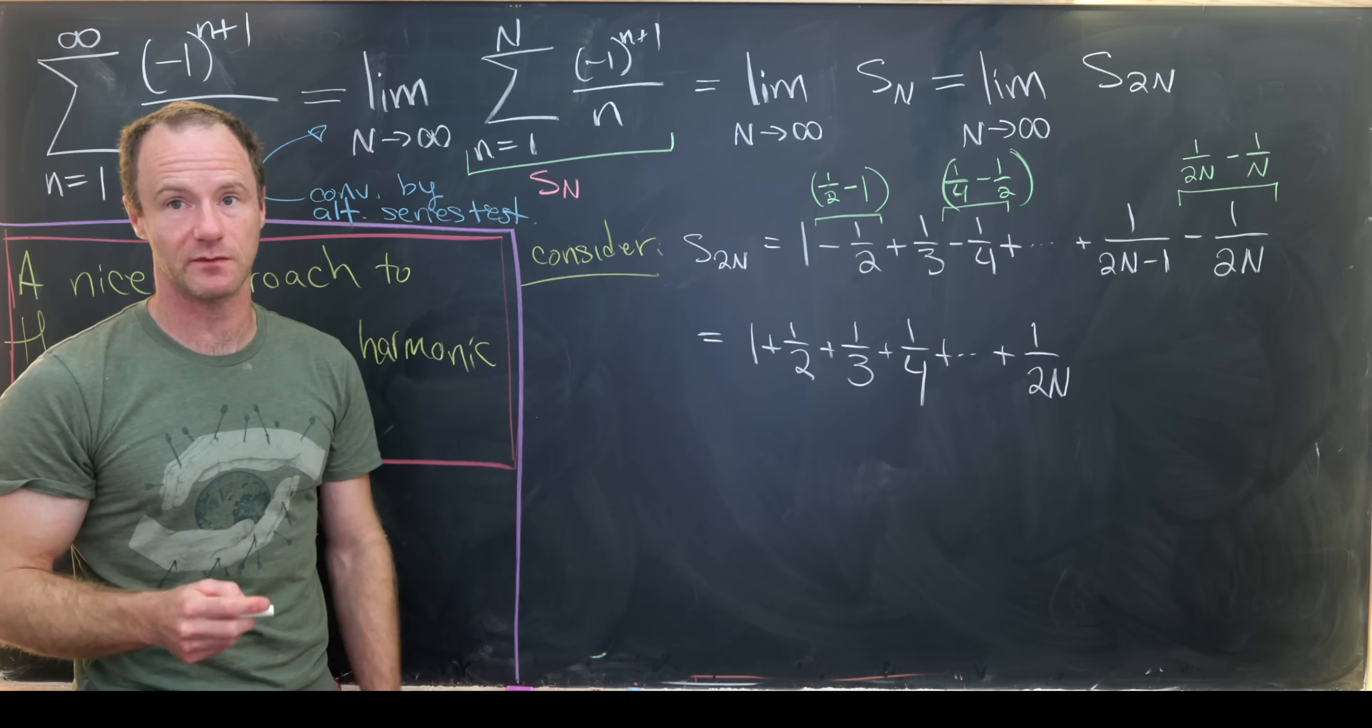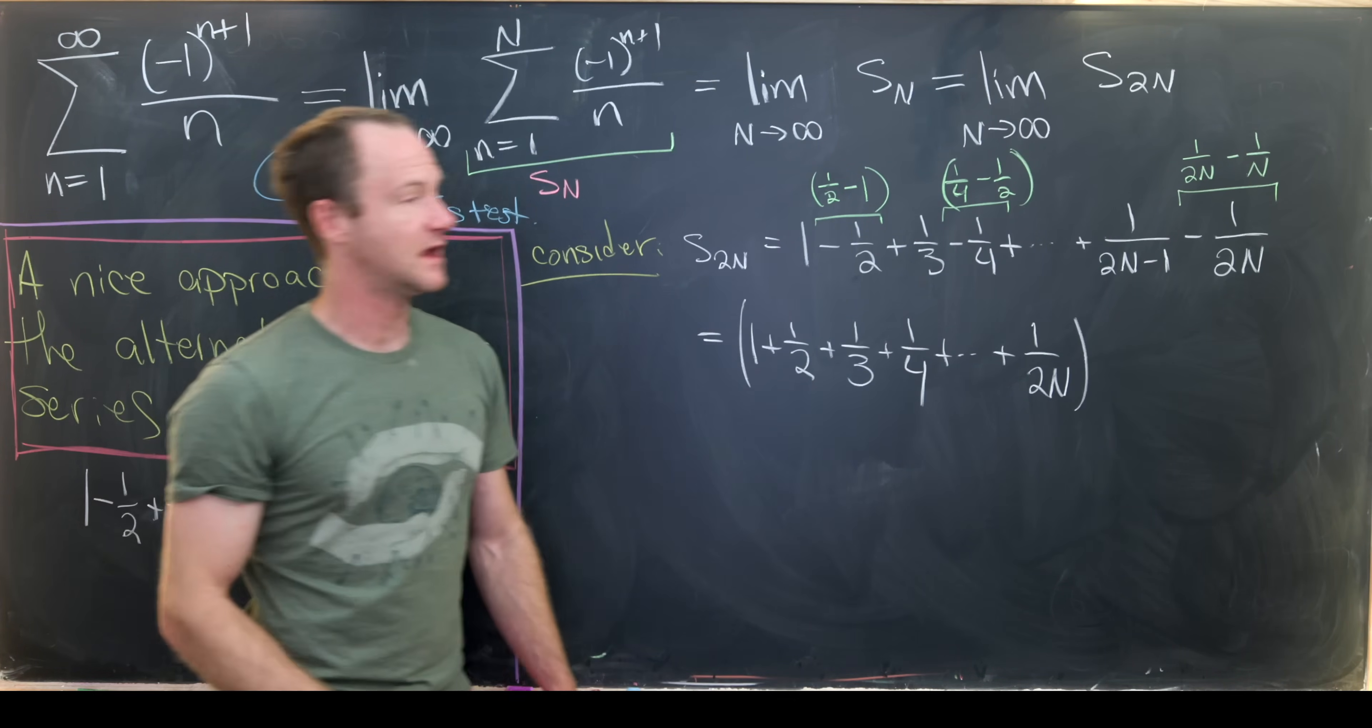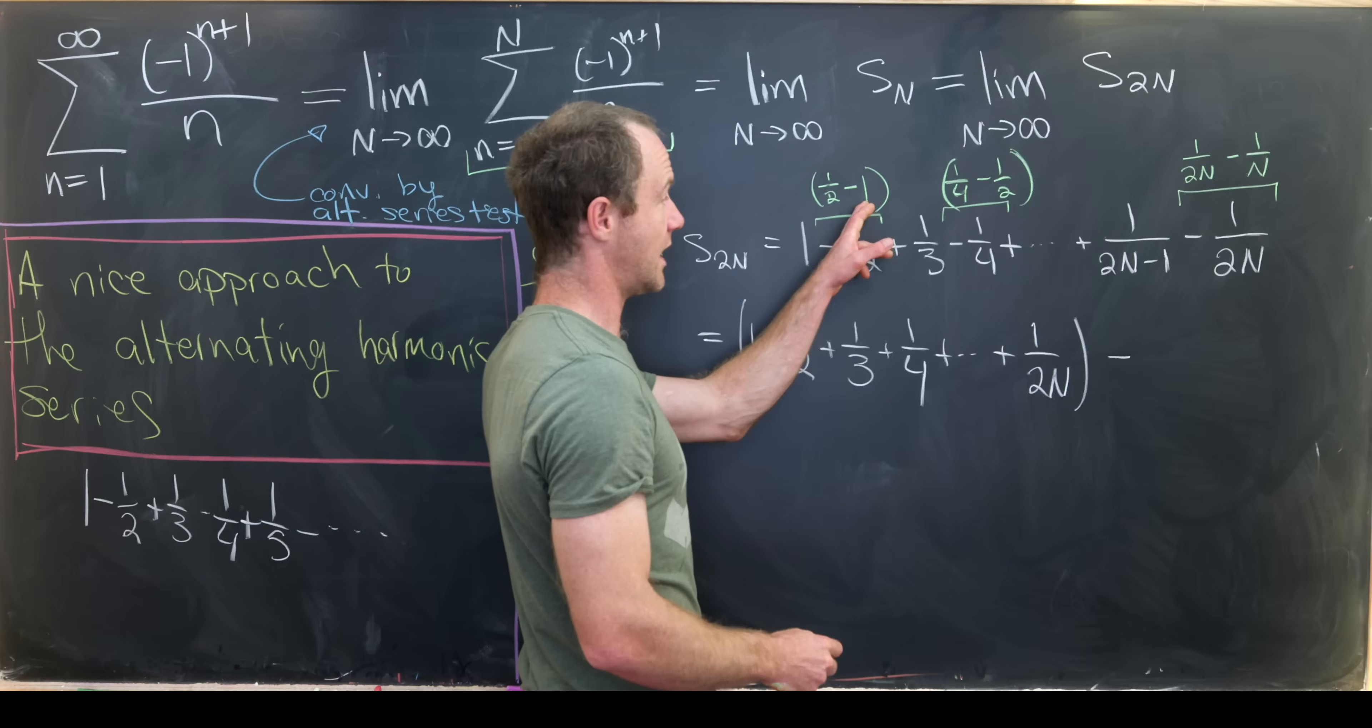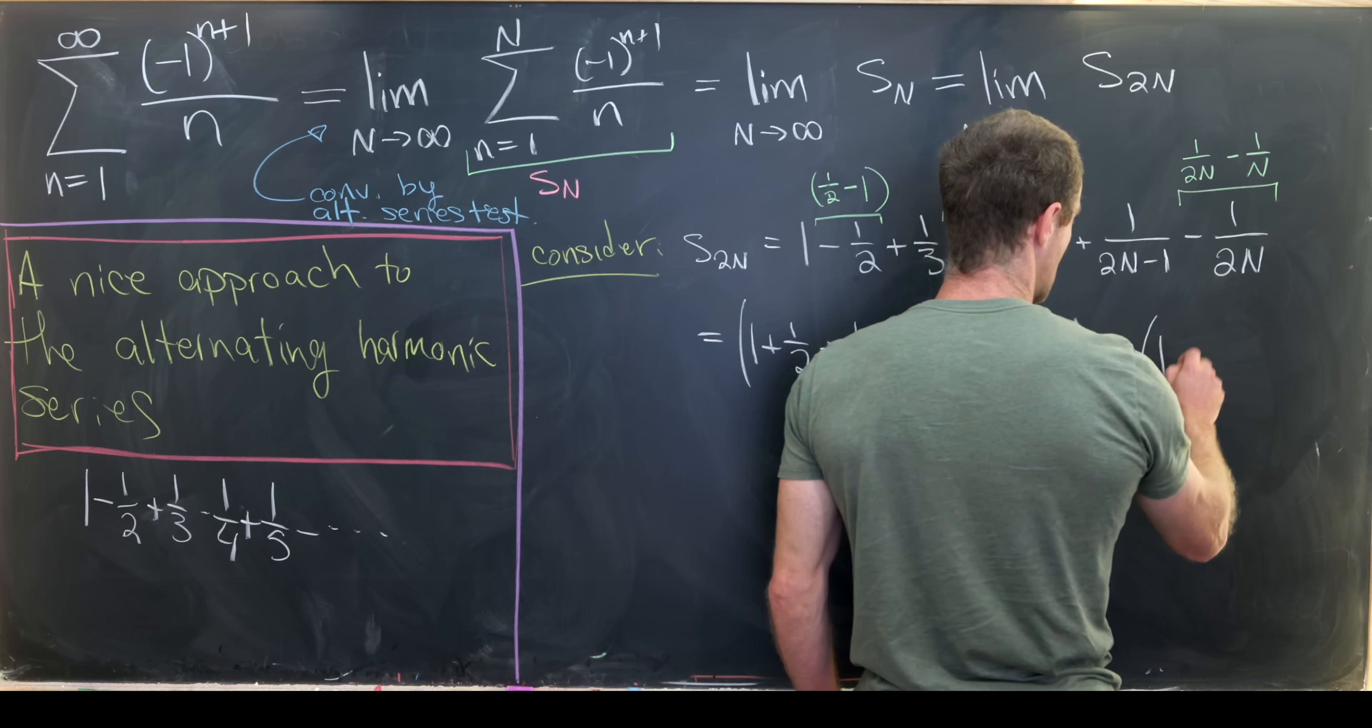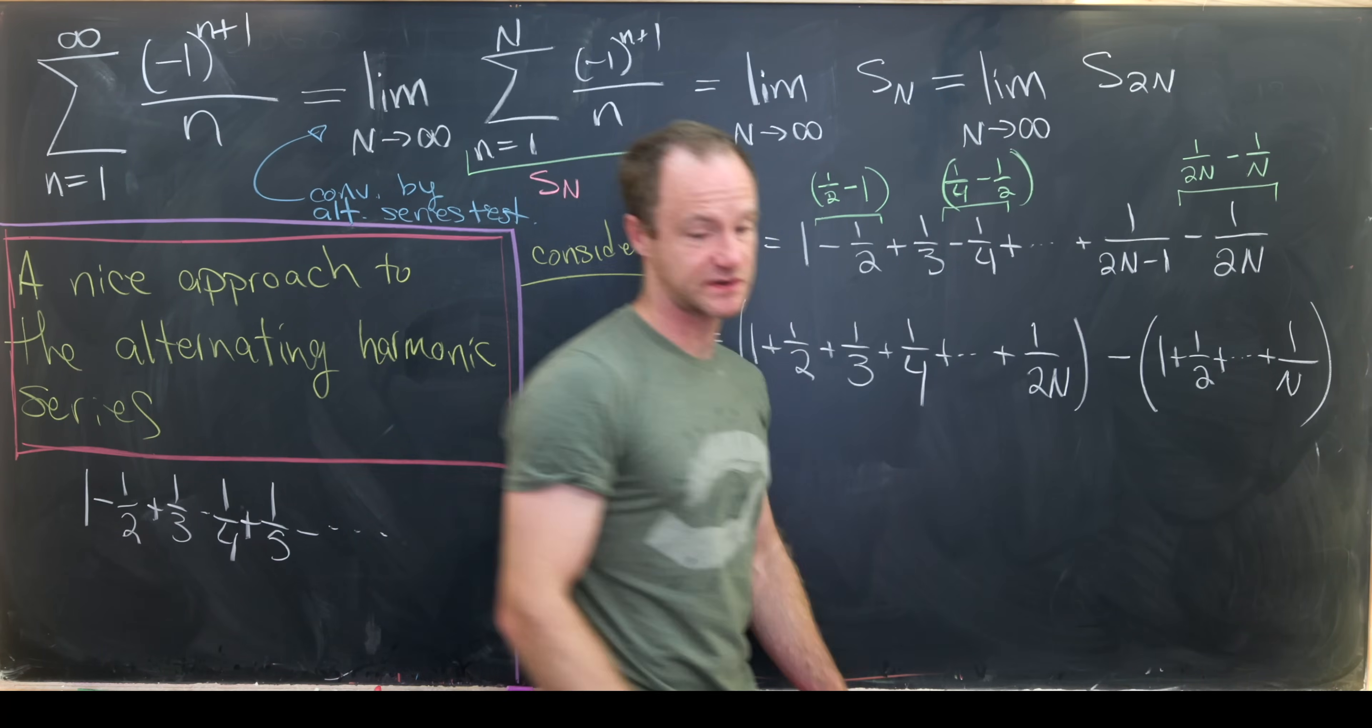In other words, like the partial sum of a harmonic series. So let's maybe group these things together. And then we'll subtract off everything else. And so everything else would be subtracting off 1, 1/2, all the way down to 1/N. So I've got minus 1 plus 1/2 plus dot dot dot all the way down to 1/N. So something like that.